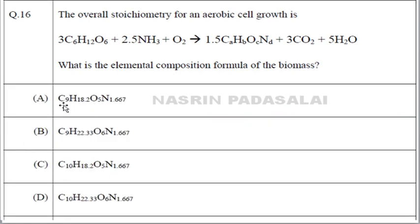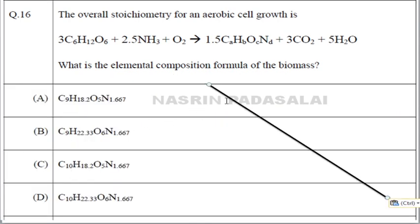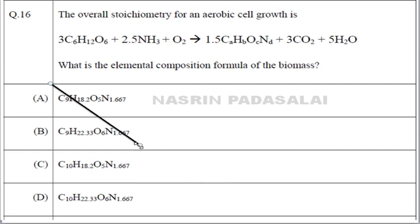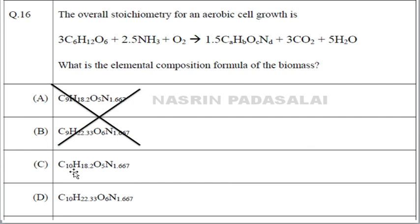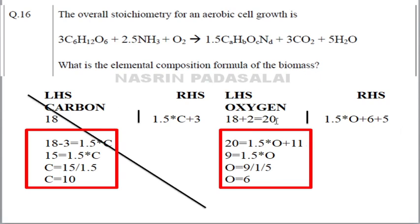Since c = 10 (not 9), we can eliminate the options where carbon is 9 — both of those options are wrong. Now we only need to check the remaining two options, where oxygen is either 5 or 6. So we proceed to balance oxygen. On the left-hand side, the total number of oxygens is 6×3 = 18, and O₂ contributes 2, giving 18 + 2 = 20.